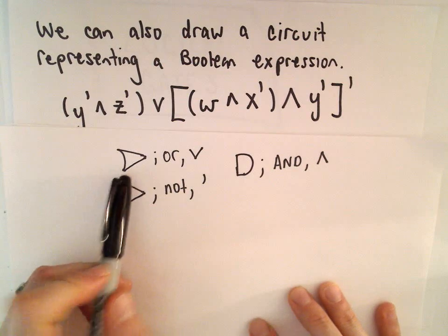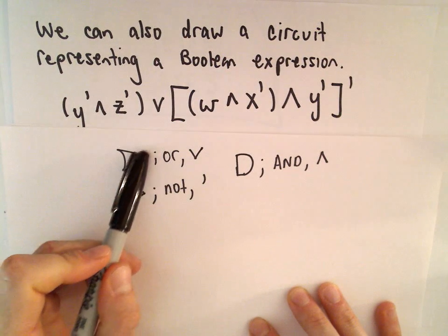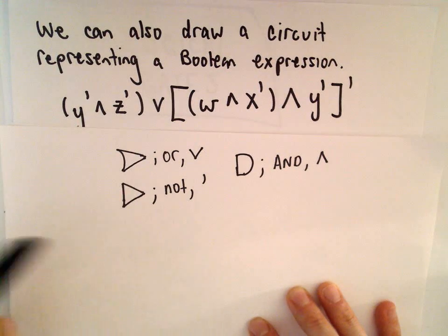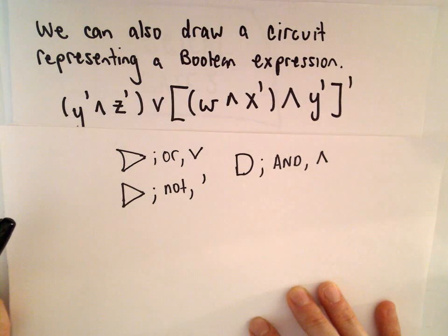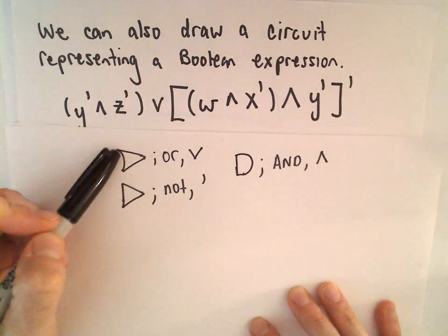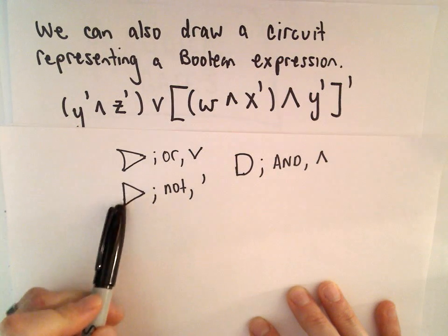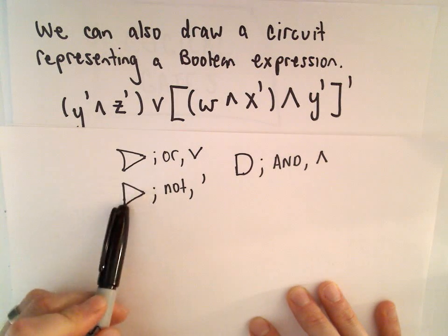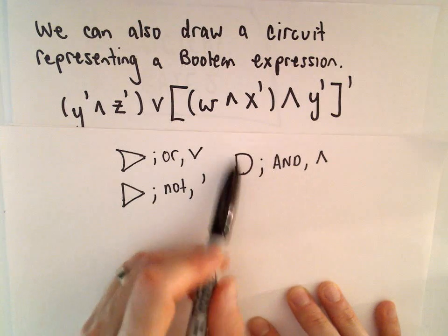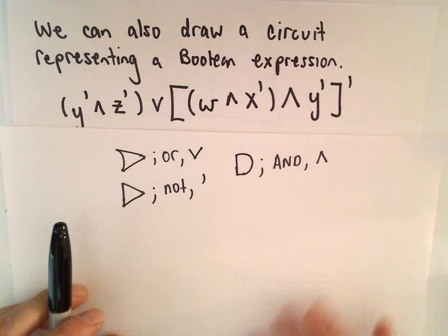This will be our OR gate. Some people have commented that without a little circle it's a buffer. I'm following the notation that my discrete math book has in it, so I'm going to follow their convention. My NOT gate is going to look like a little triangle on its side, and then my AND gate kind of looks like a big old D there.